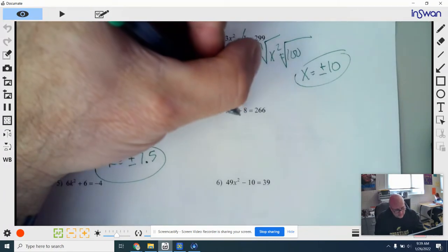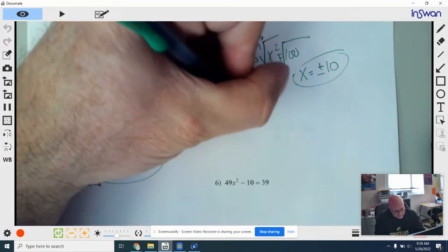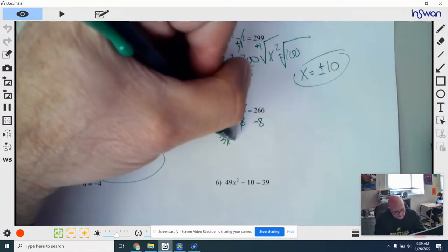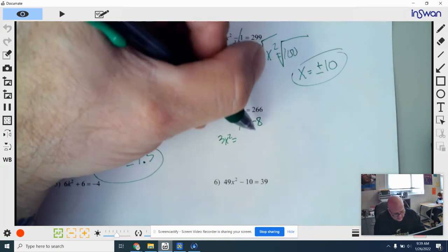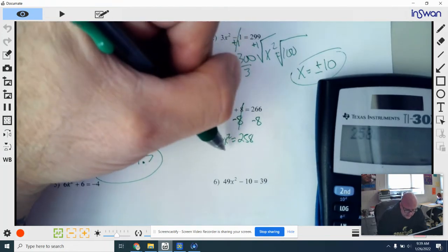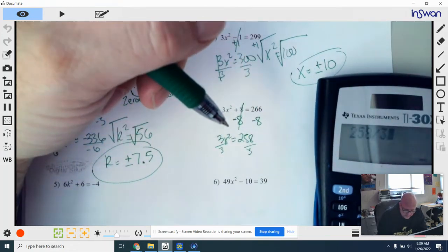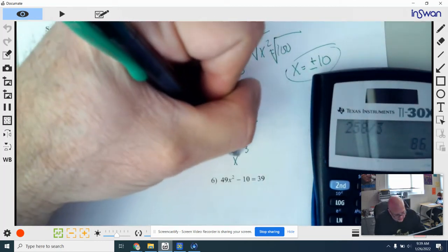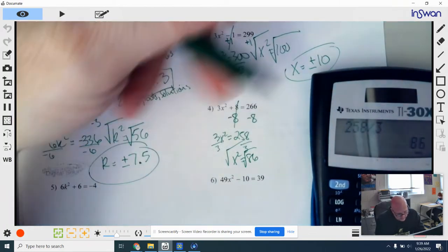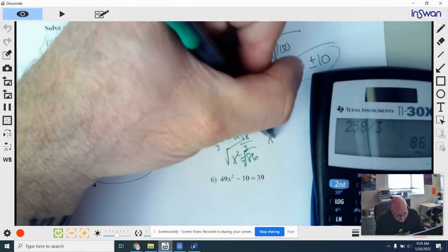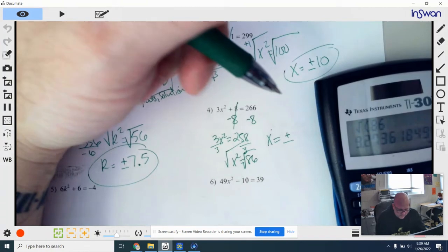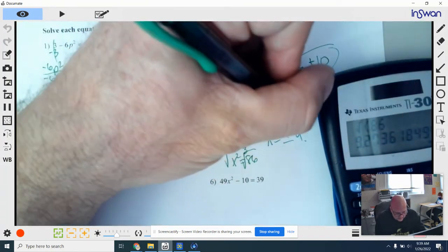Number 4. I would just subtract 8 to both sides. That cancels out. So you've got 3x squared equals 266, take away 8, 258. So if I take 258 now and divide it by 3, you get 86. So x squared equals 86. I know that's not a perfect square. So we're going to square root the left side and the right side. So you get x equals plus or minus, square root of 86. Round it off to the nearest tenth. We'll say about 9.3.